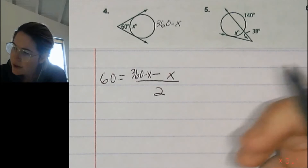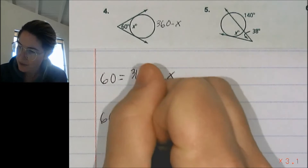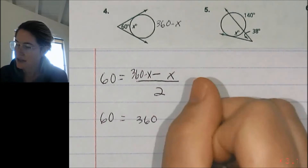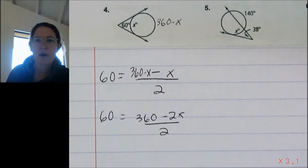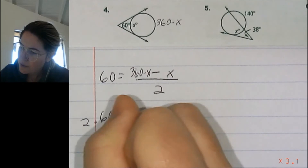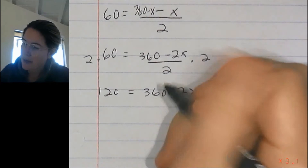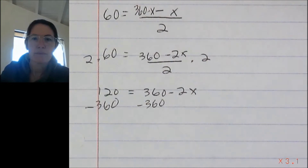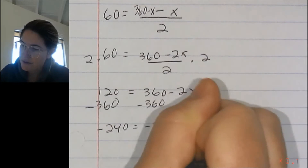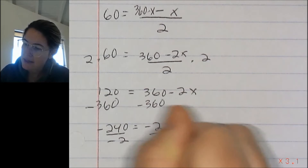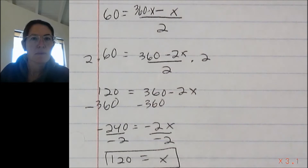Let's solve. Combining like terms: 60 equals (360 minus 2x) over 2. Multiply both sides by 2: 120 equals 360 minus 2x. Subtract 360 from both sides: negative 240 equals negative 2x. Divide by negative 2 on both sides, and x equals positive 120 degrees.